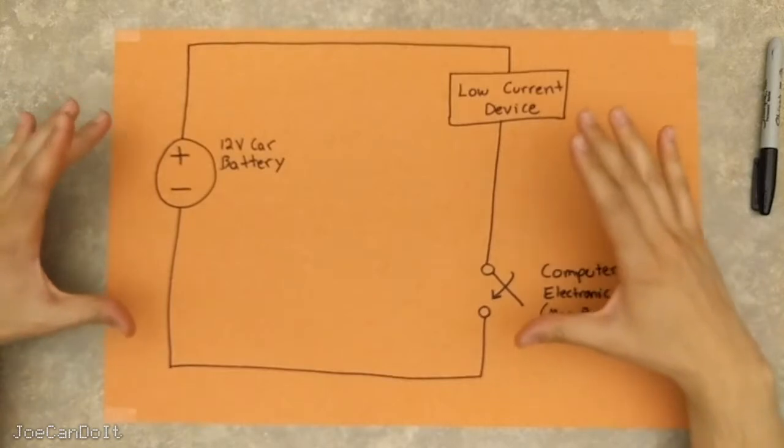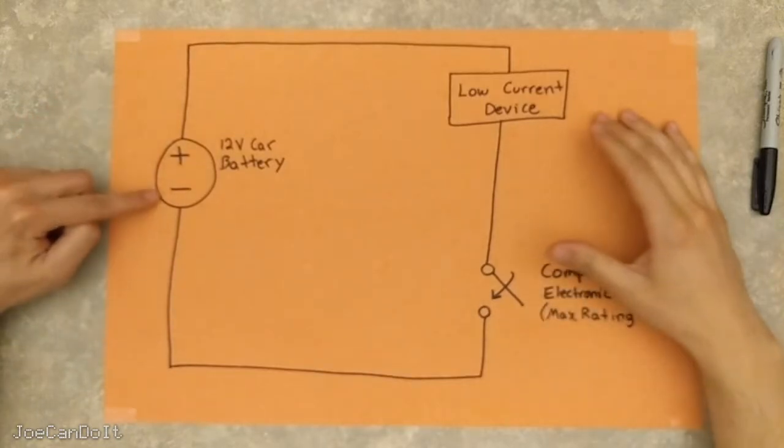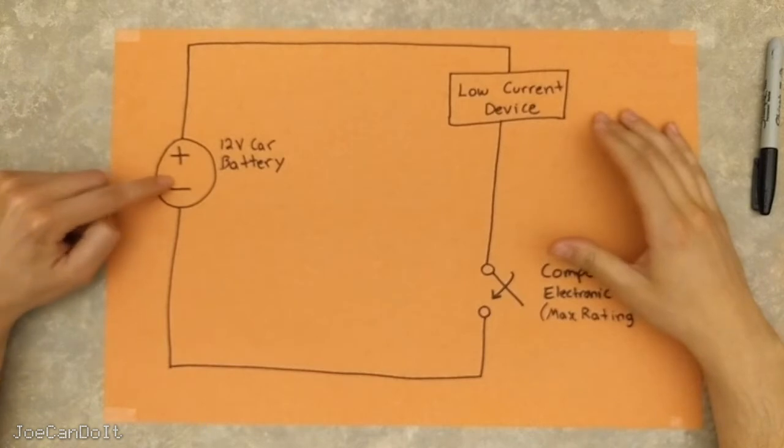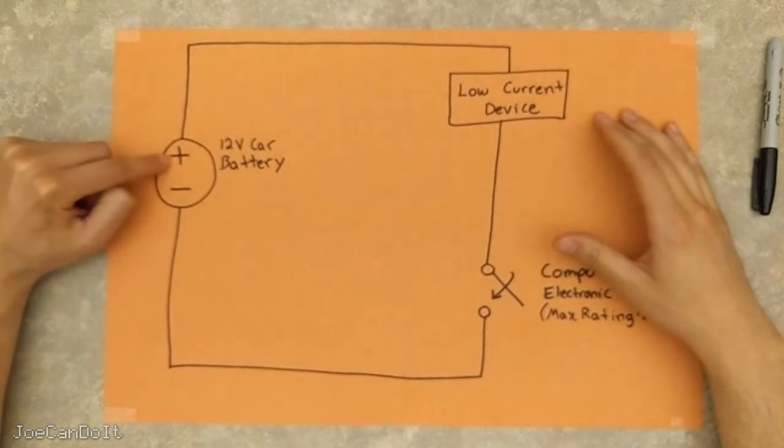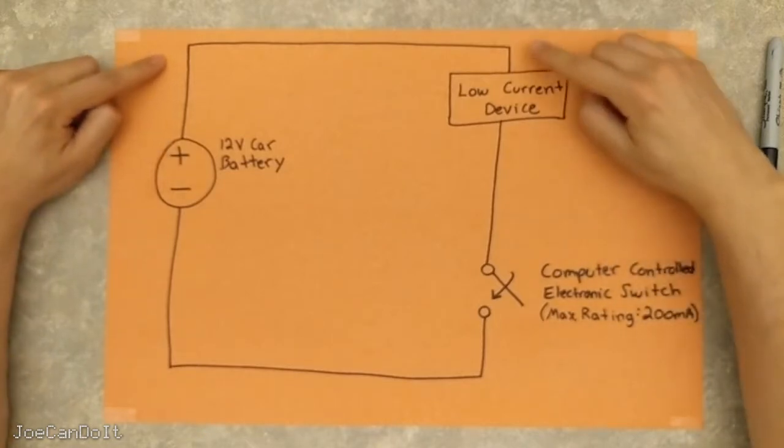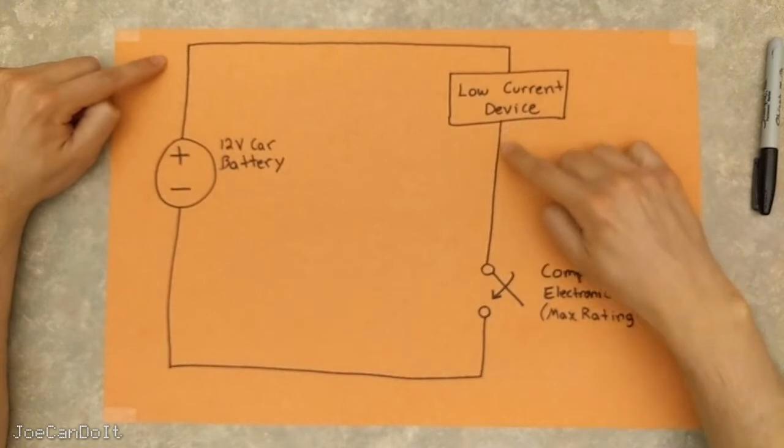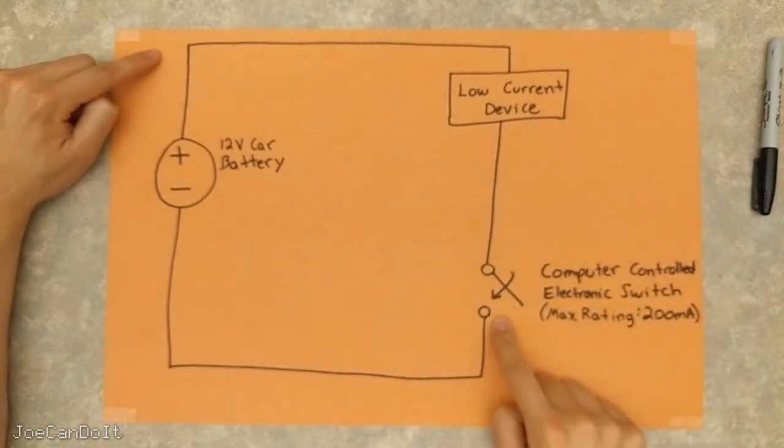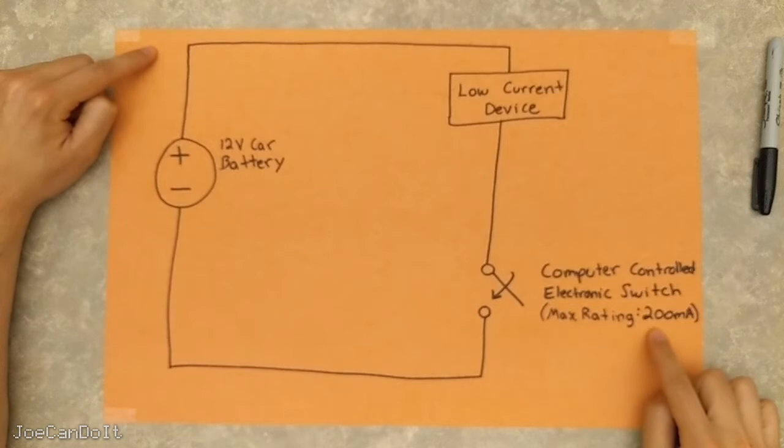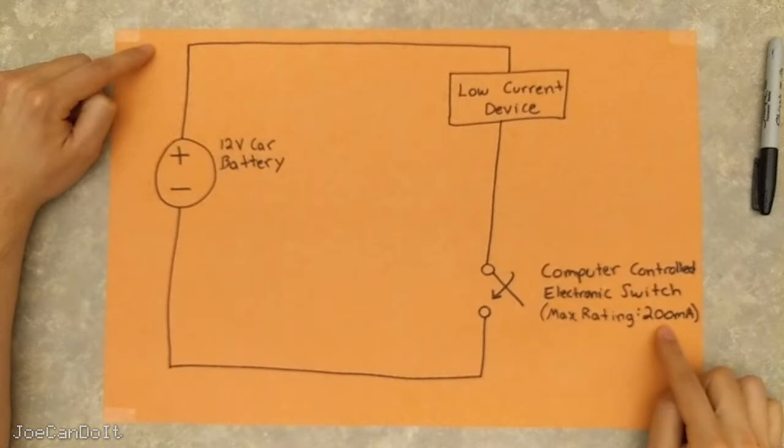So here we have a simplified circuit of what a computer controlled circuit might look like in your car. Here we can see the car battery. We have here the chassis ground end and here the positive end. This end connects to a low current device at all times, and the low current device goes through this little electronic switch that is computer controlled. Notice that the switch can only have a max rating of 200 milliamps going through it. It's kind of low, but it's not out of the ordinary for an electronic switch.